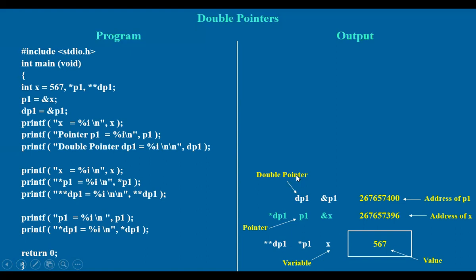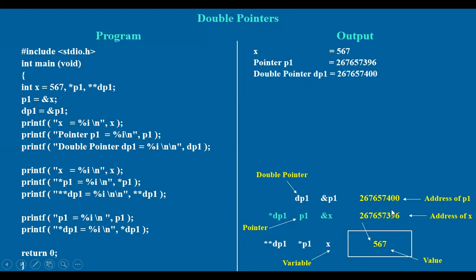We added one star here. Let us see how the output will be. The x value — it is directly showing 567. The pointer, this is the value, 96. Next, double pointer — this is a double pointer, that is a pointer to pointer. This is the address of p1.